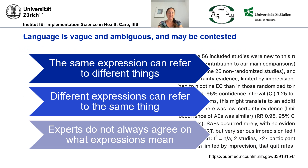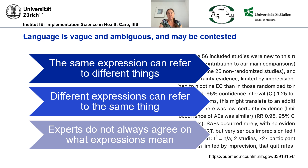The basic motivation for ontologies in scientific contexts is that communication about scientific research is typically done with language. All human communication is based on natural language. But language is unfortunately not fully exact. So you have situations where the same expression, phrase, or word can refer to multiple things. And you have other situations where people use different expressions to refer to the same thing.